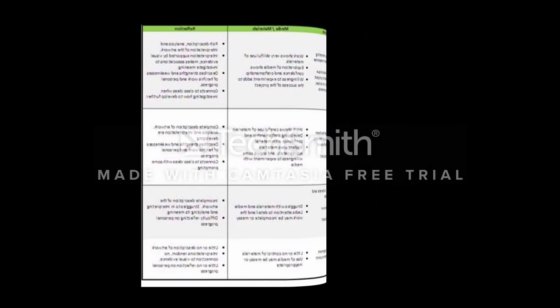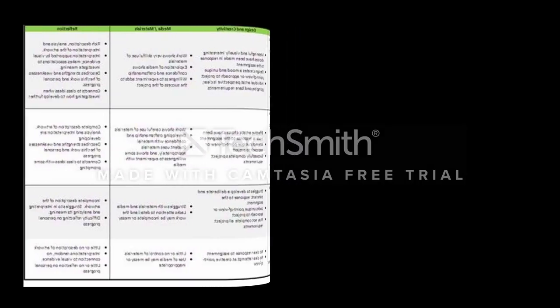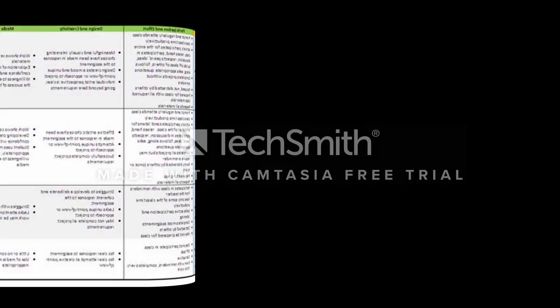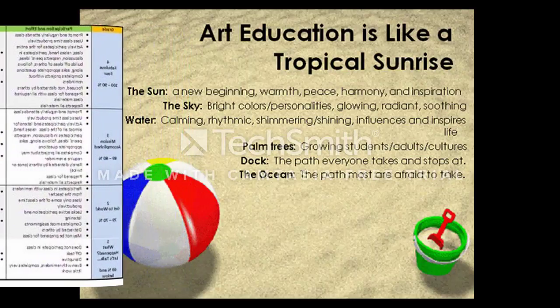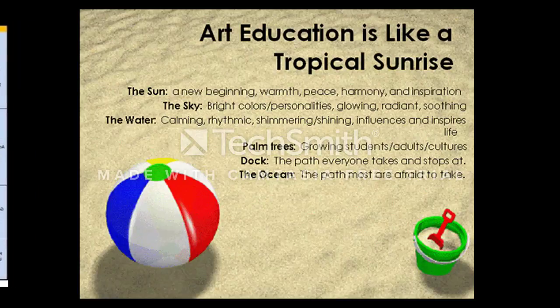I want to leave this quote with you, which I think is very important. It says: art education is like a tropical sunrise — the sun, the sky, the water, palm trees, a dock in the ocean — everything plays an important part in your life, it plays an important part in your work. Everything has rhythm, because we know art is the basis of everything.